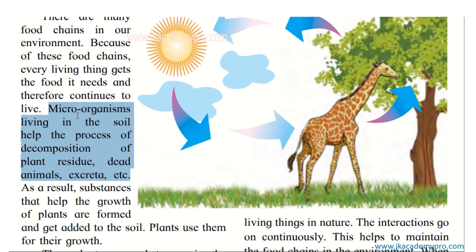Microorganisms living in the soil help the process of decomposition of plant residue, dead animals, excreta, etc. Microorganisms are living things so tiny we cannot see them with our naked eye, but they are present in the air and in the soil. These microorganisms help in the process of decomposition — breaking down dead plants, dead leaves, and fallen leaves into tiny parts that go into the soil.